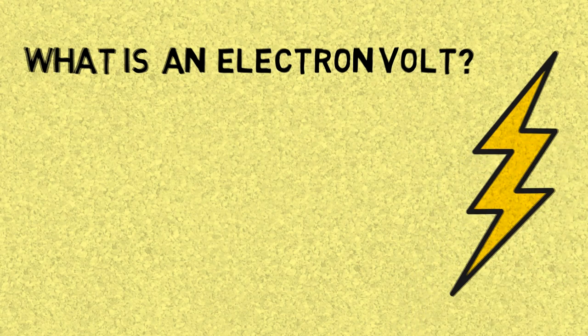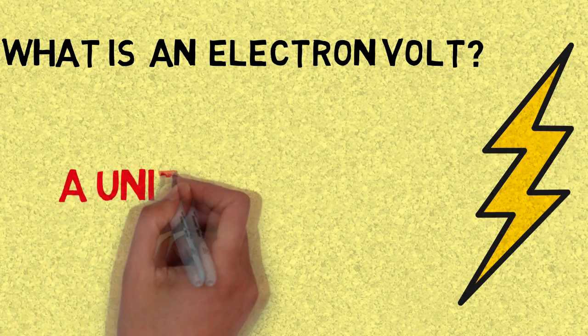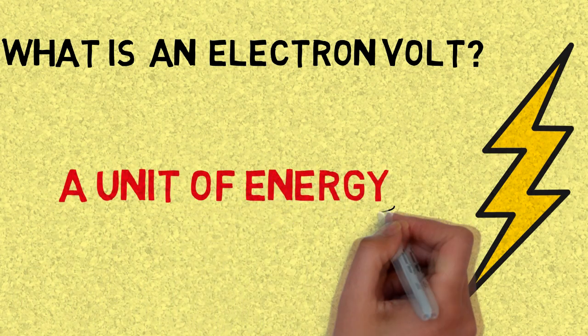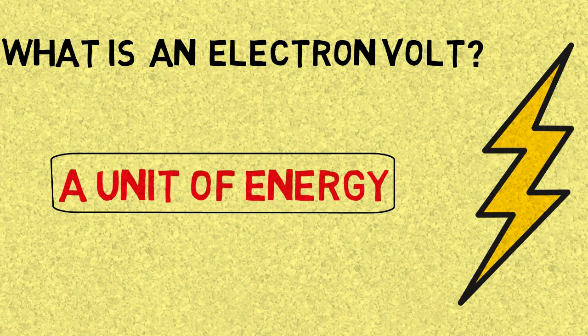First of all, an electron volt is a unit of energy just like a joule and we'll get back to that in a second. So what is an electron volt?